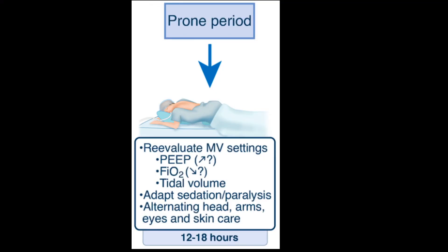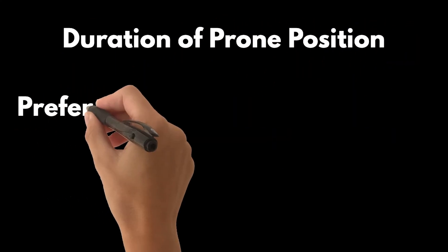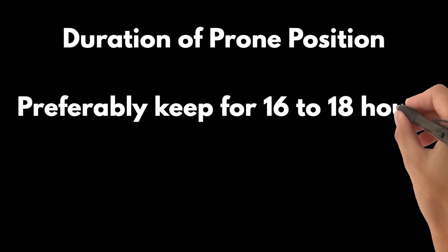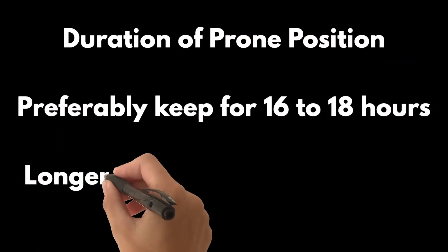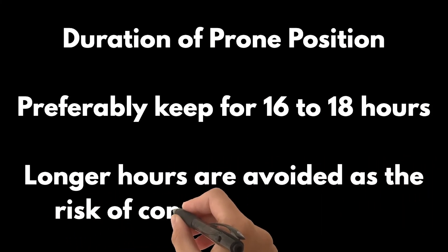During the proning period, re-evaluate ventilator settings: PEEP, FiO2, and tidal volume. Adapt sedation and paralysis. Alternately provide head, arm, eye, and skin care. Monitor for deterioration. The prone position should preferably be maintained for 16 to 18 hours. Longer hours are avoided as the risk of complications is high.